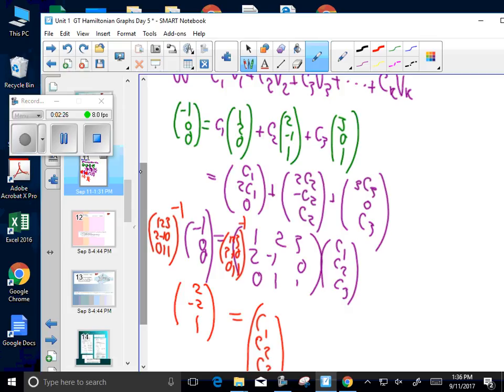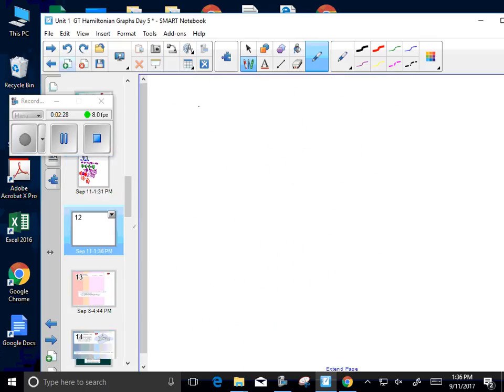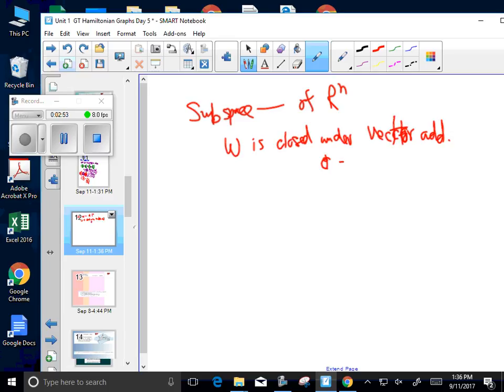Let me do one more quick thing, and that is a subspace. We'll get it just introduced. Okay, so of R to the N, and W is closed under, what is it, vector addition? Vector addition and scalar multiplication.